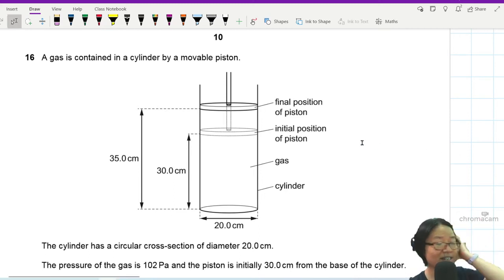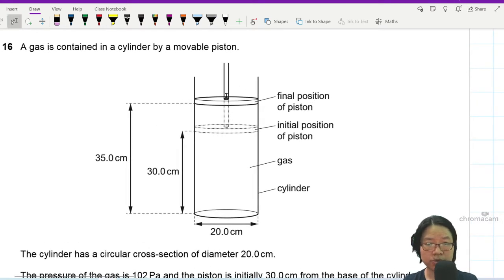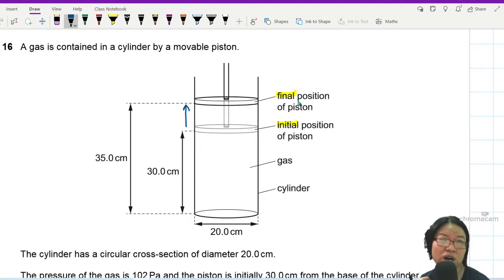Question 16. A gas is contained in a cylinder by a movable piston. So you have a piston here that we're going to compress. Final and initial position. Looking at this final and initial position, it means that I am pushing or pulling the piston in this direction. So a good example that you can have in your house is the handheld pump they used to pump the balloon.